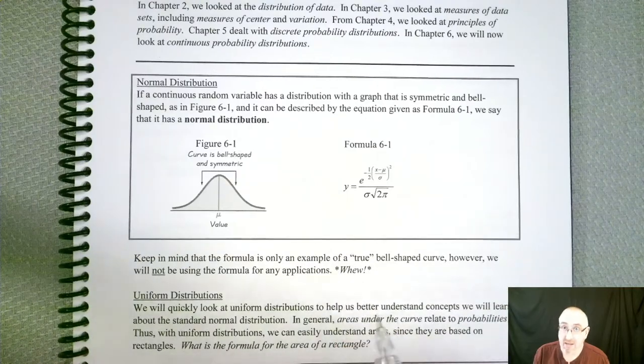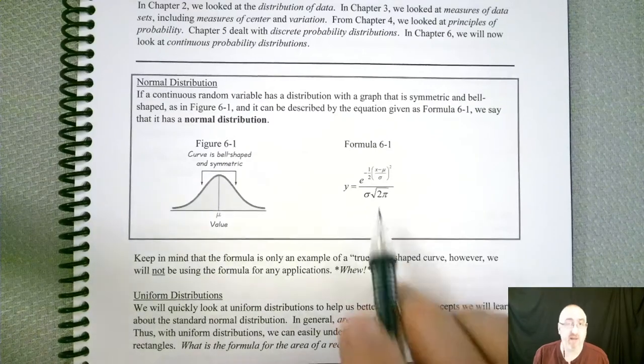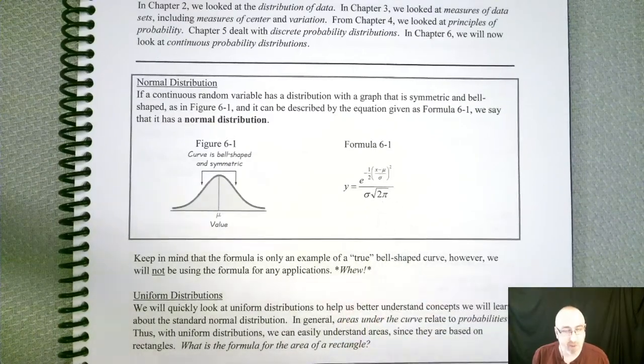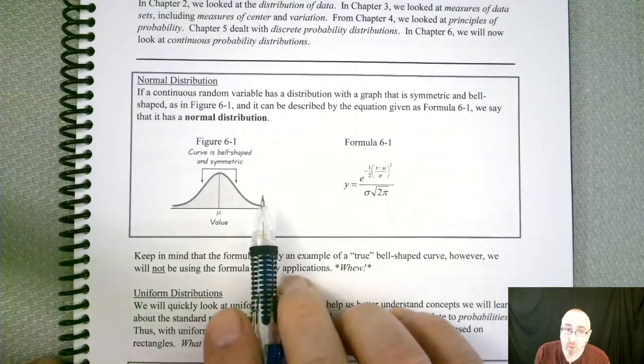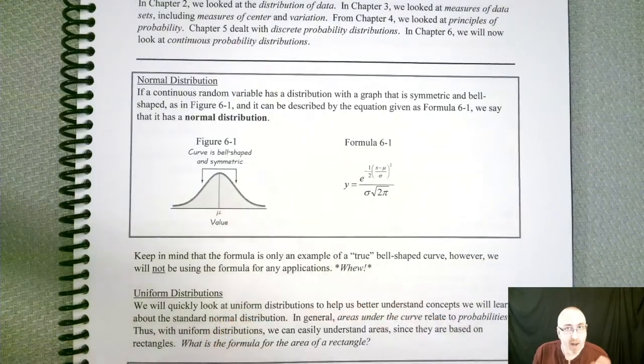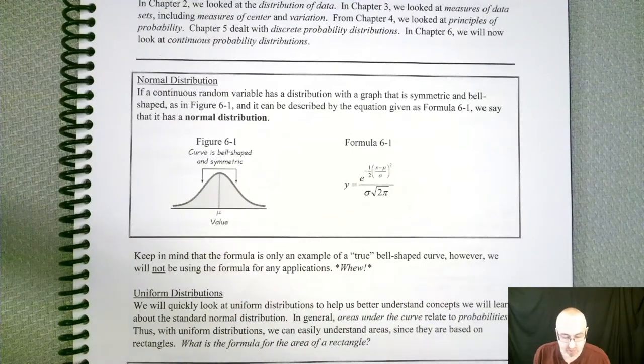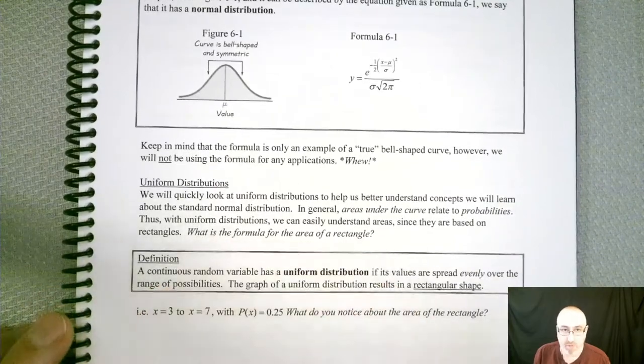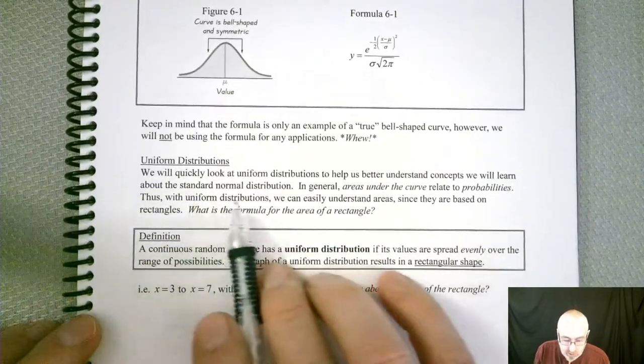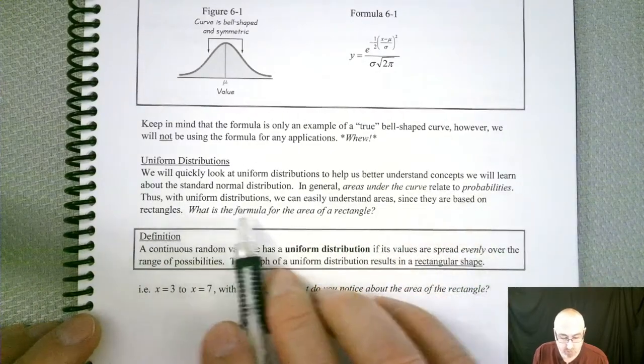But technically it does have a formula. So if you go into higher-level mathematics, higher-level statistics, you would be seeing that, you would be using that. But we are not, not for this course. All right. So before we get into the normal distribution and how we can analyze that with probabilities, we are going to look at a simpler case of distribution. Another one we have talked about, the uniform distribution.